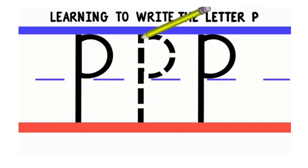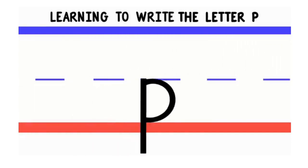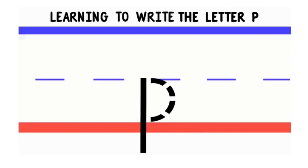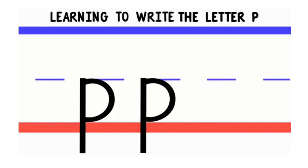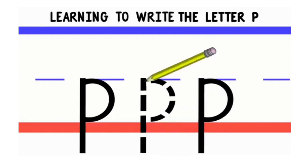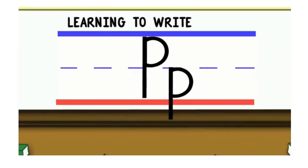Now let's move on to lowercase or little p. To write little p, we'll start in the middle and do a straight line down. Then go back to the middle and do a curved line around. Good job. Let's do that again. Start in the middle and do a straight line down, then go back to the middle and do a curved line around. Good job. Now you try. Good job. Now you know how to write the letter P.